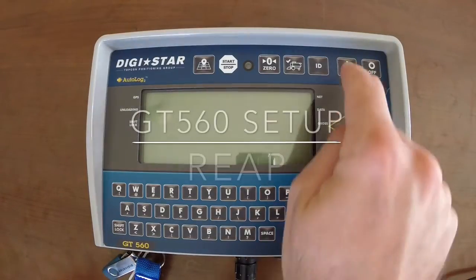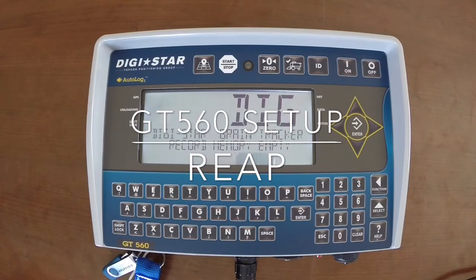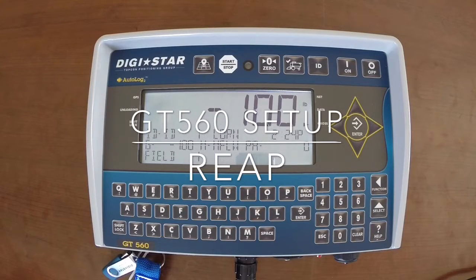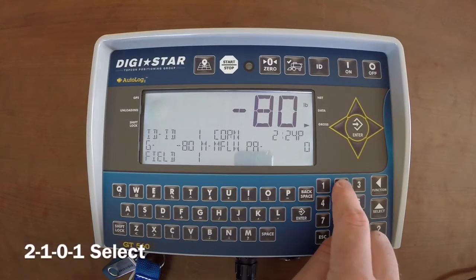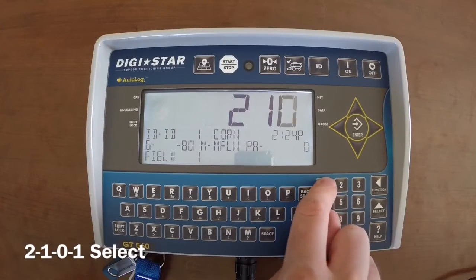Welcome to the GT560 setup video for the REAP system. First thing you're going to want to do is turn your indicator on. After it boots up, type in 2101 and then the select button.